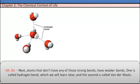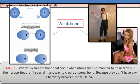Next, atoms that don't have any of those strong bonds have weaker bonds. One is called a hydrogen bond, which we will learn later, and the second is called van der Waals. Van der Waals are bonds that occur when atoms just happen to be nearby, but their properties aren't special in any way to create a strong bond, because they don't have any chemistry between them.